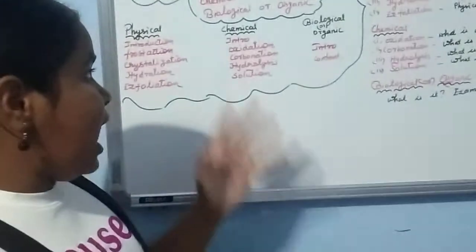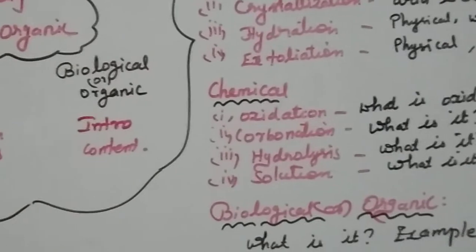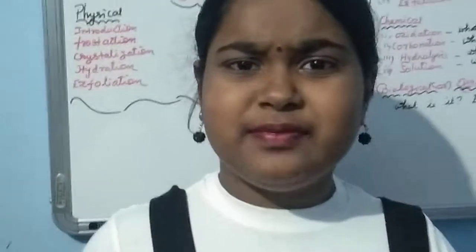Now we have completed physical weathering. Let's move to chemical weathering. The topics under chemical weathering are oxidation, carbonation, hydrolysis, and solution. Chemical weathering is where rocks are decomposed due to weather and climate changes. Chemical weathering is one of the most important processes for the rock cycle.